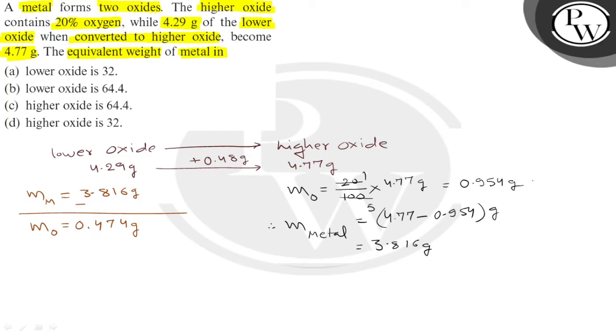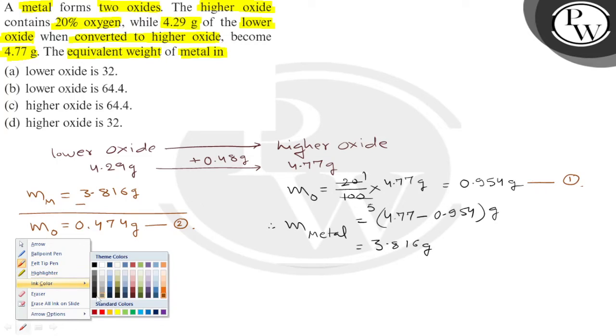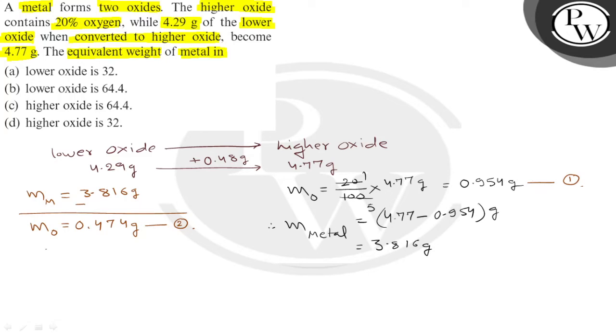So, these are two masses, mass of oxygen in higher oxide, this is mass of oxygen in lower oxide. As far as metal's mass is concerned, it is the same in both places.